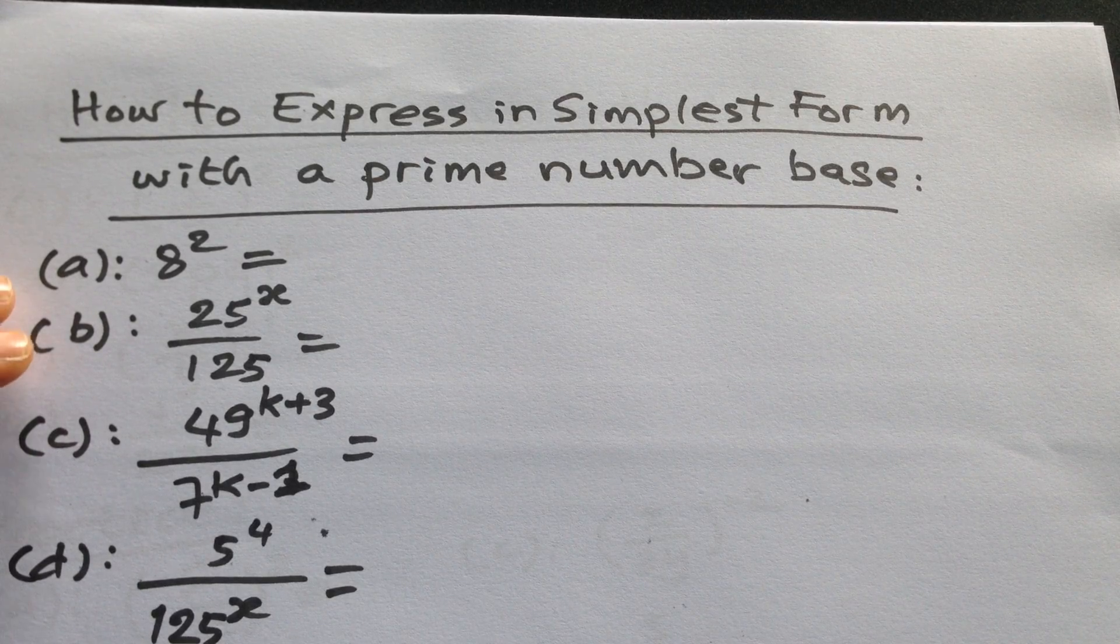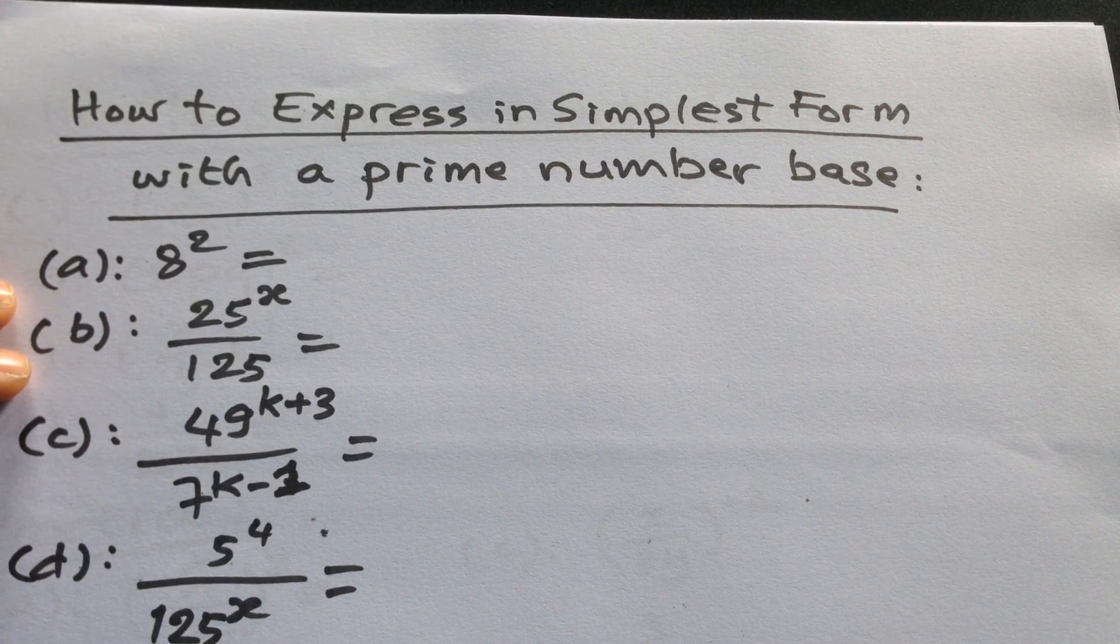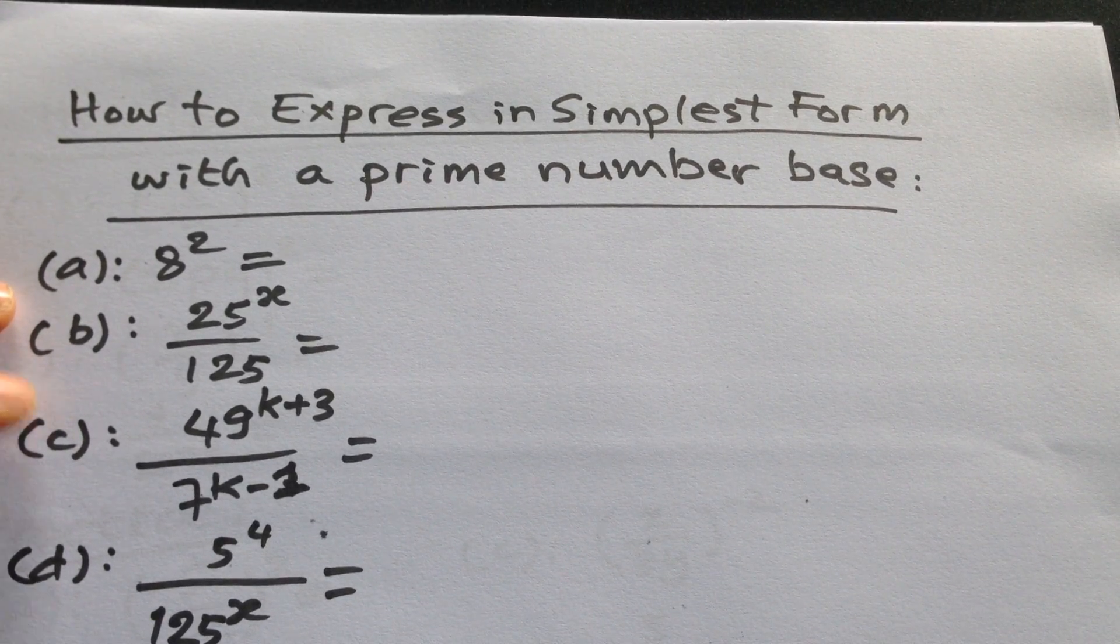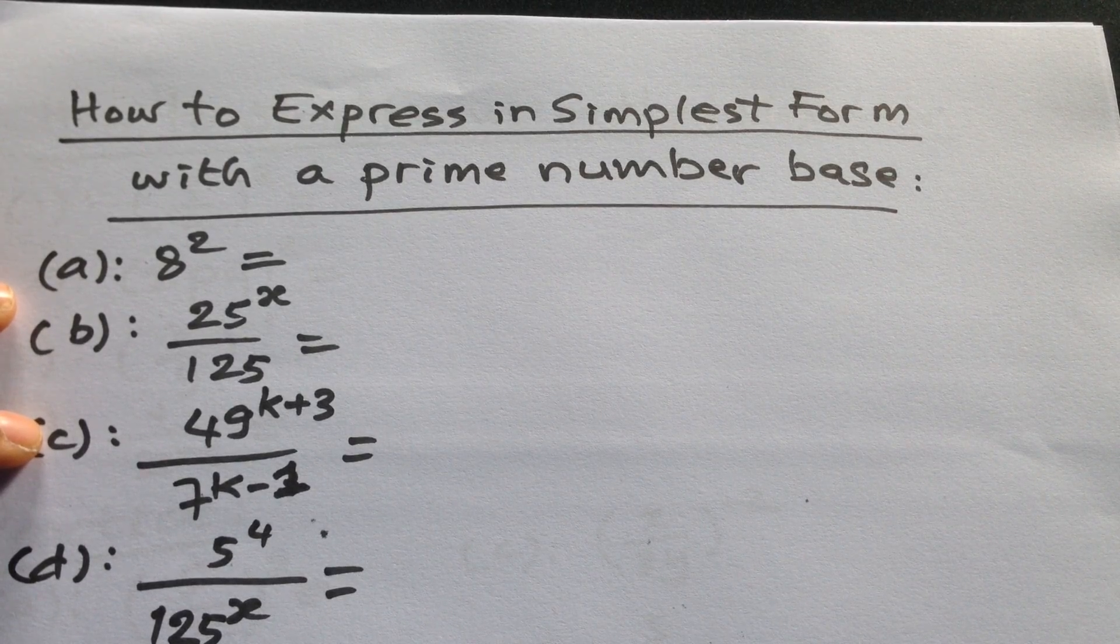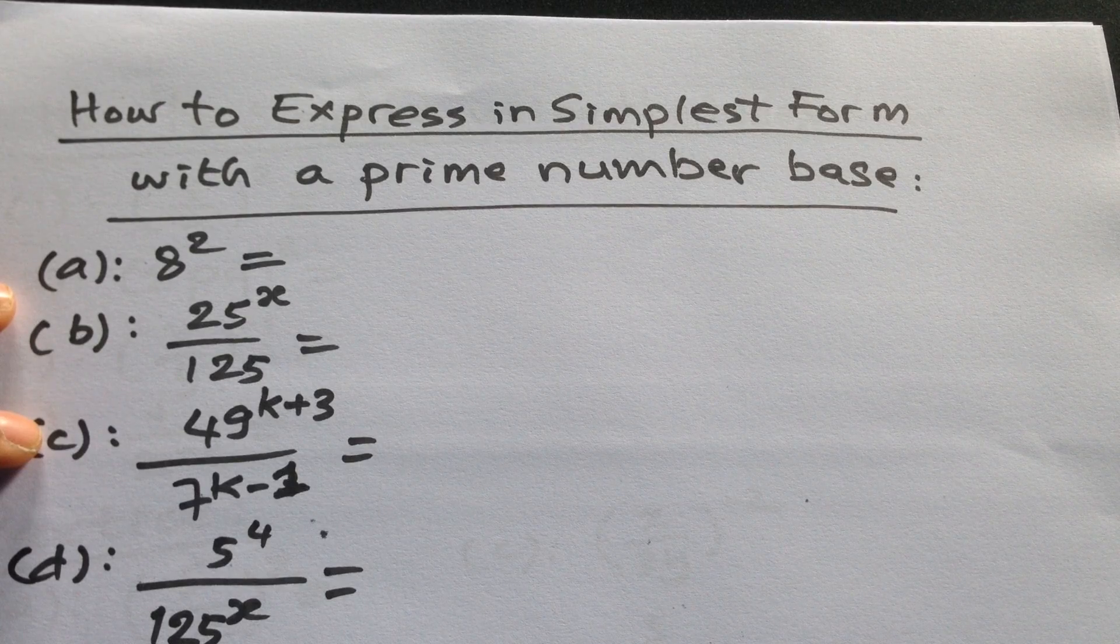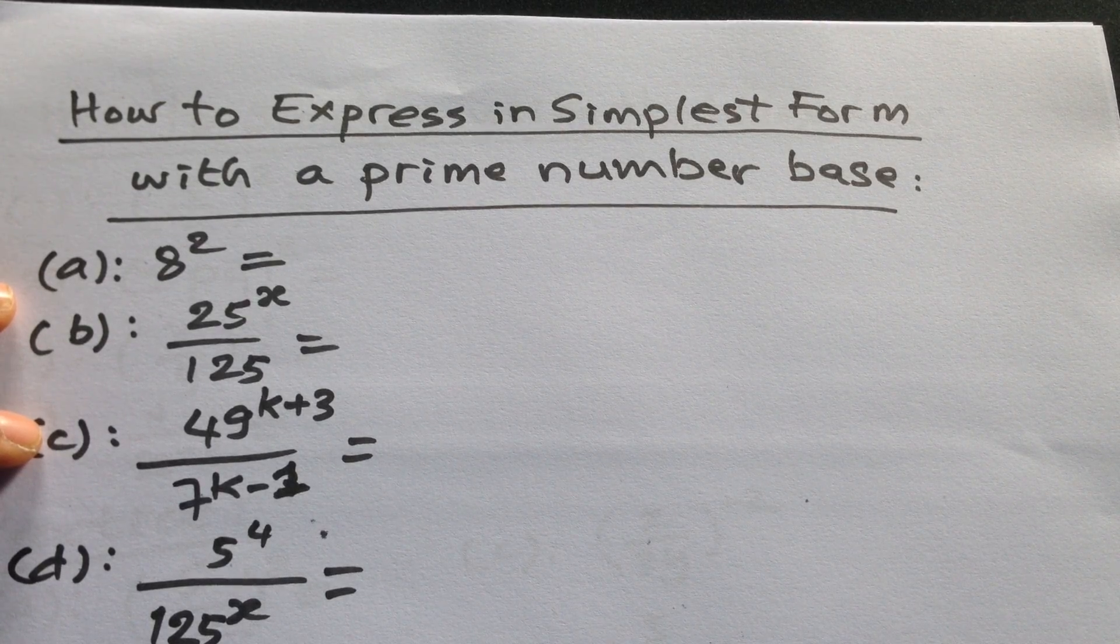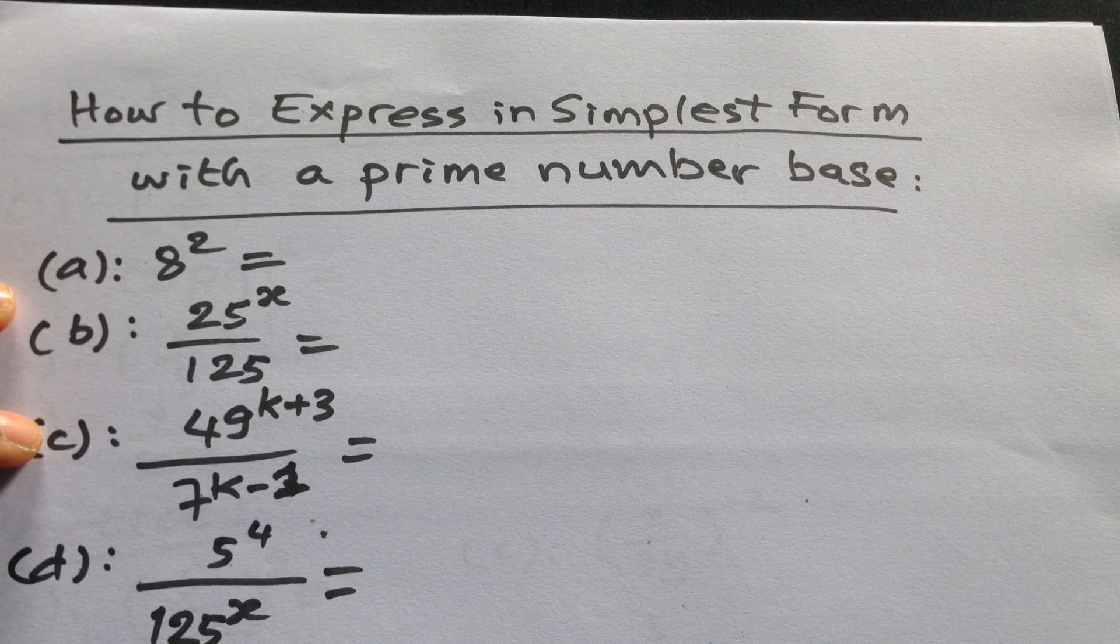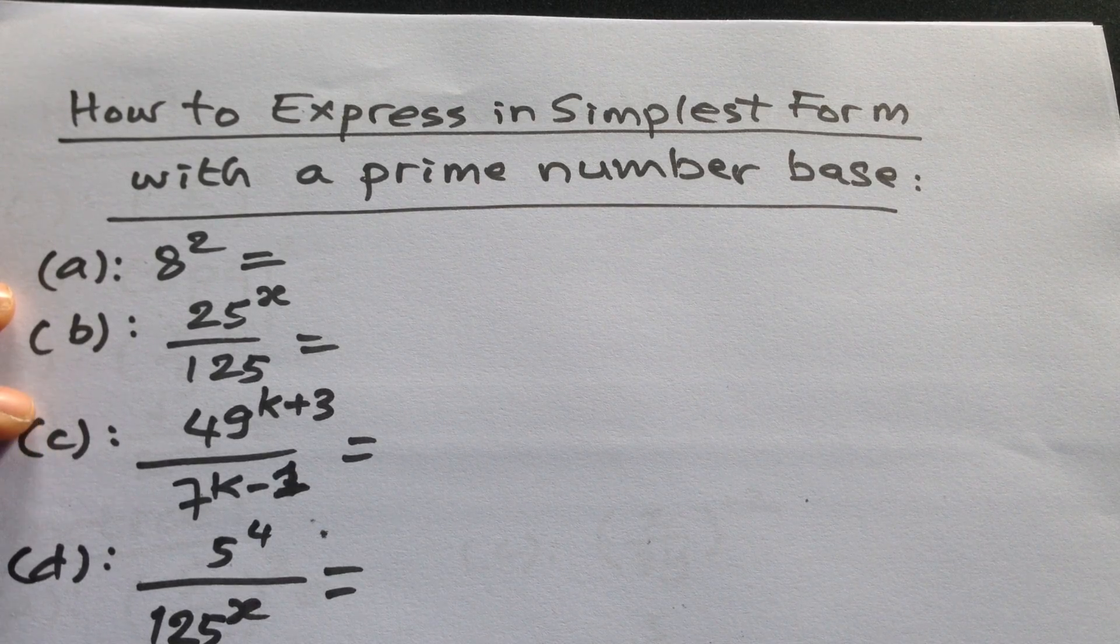Problem (a): 8 to the power 2. Problem (b): 25 to the power x divided by 125. Problem (c): 49 to the power k+3 divided by 7 to the power k-1. Problem (d): 5 to the power 4 divided by 125 to the power x.